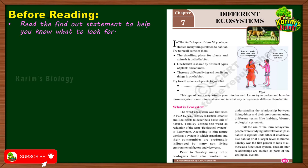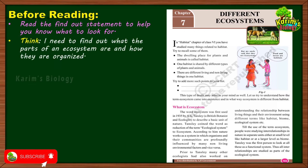In every page there will be a statement indicating what information is given on that page. For example, this lesson is about different ecosystems, and you can see the 'find out' heading: 'What is ecosystem?' Below that, a few paragraphs are given. By looking at the find-out statement, you already know the paragraphs are about ecosystems, so you know what to expect before you start reading.